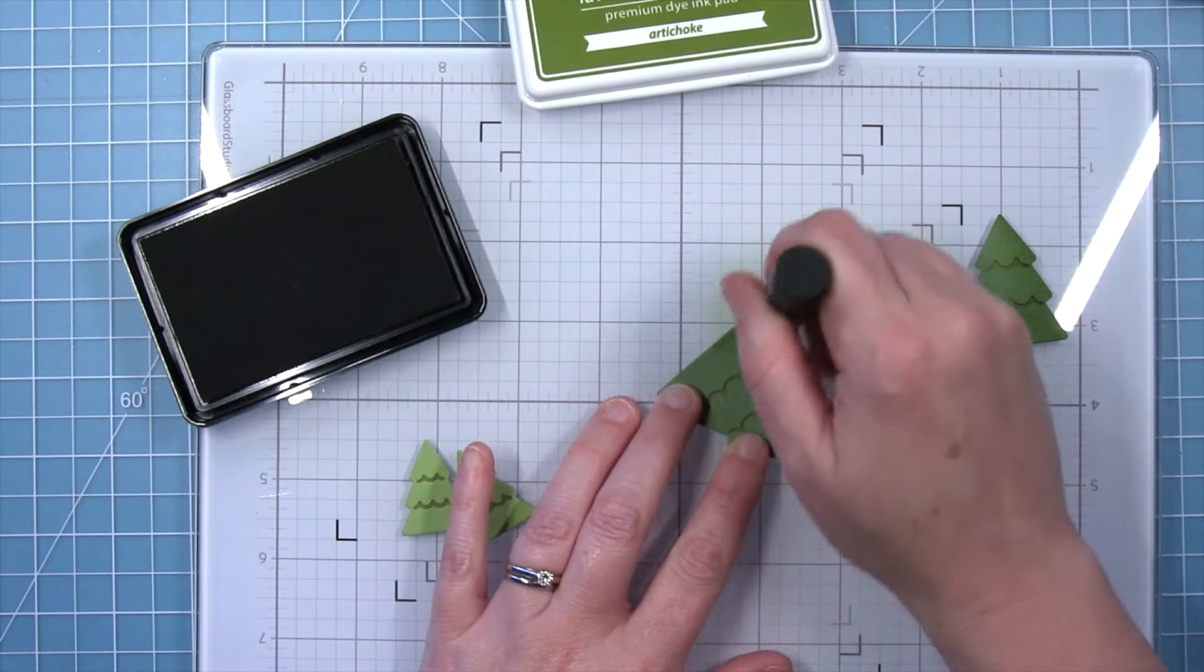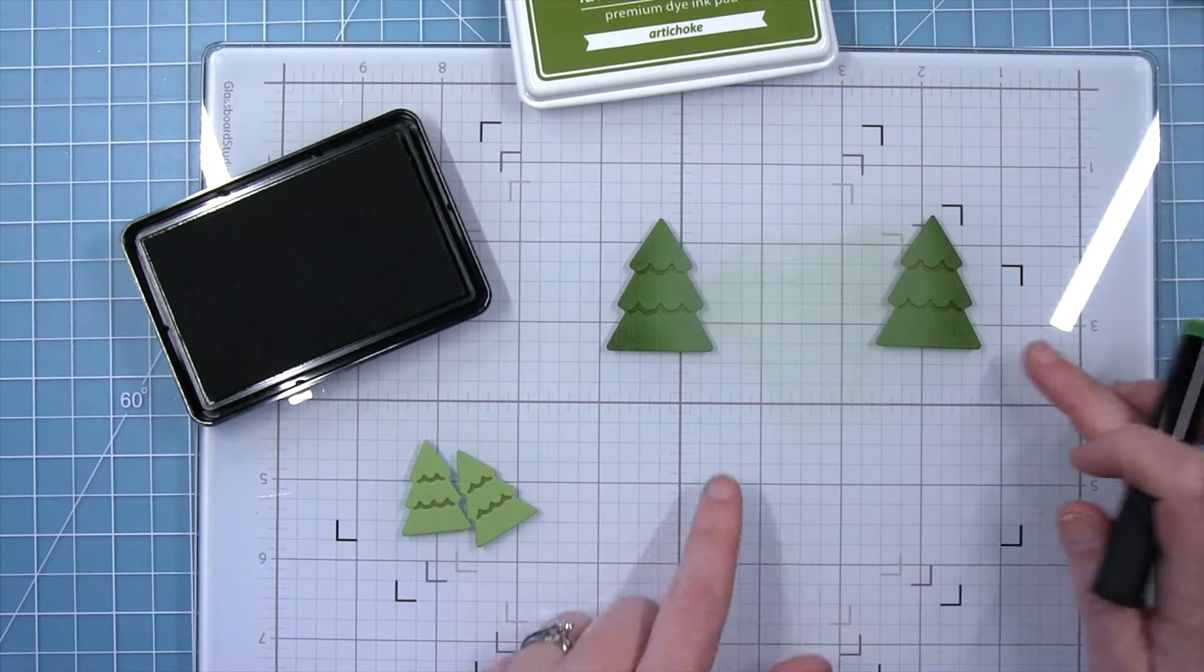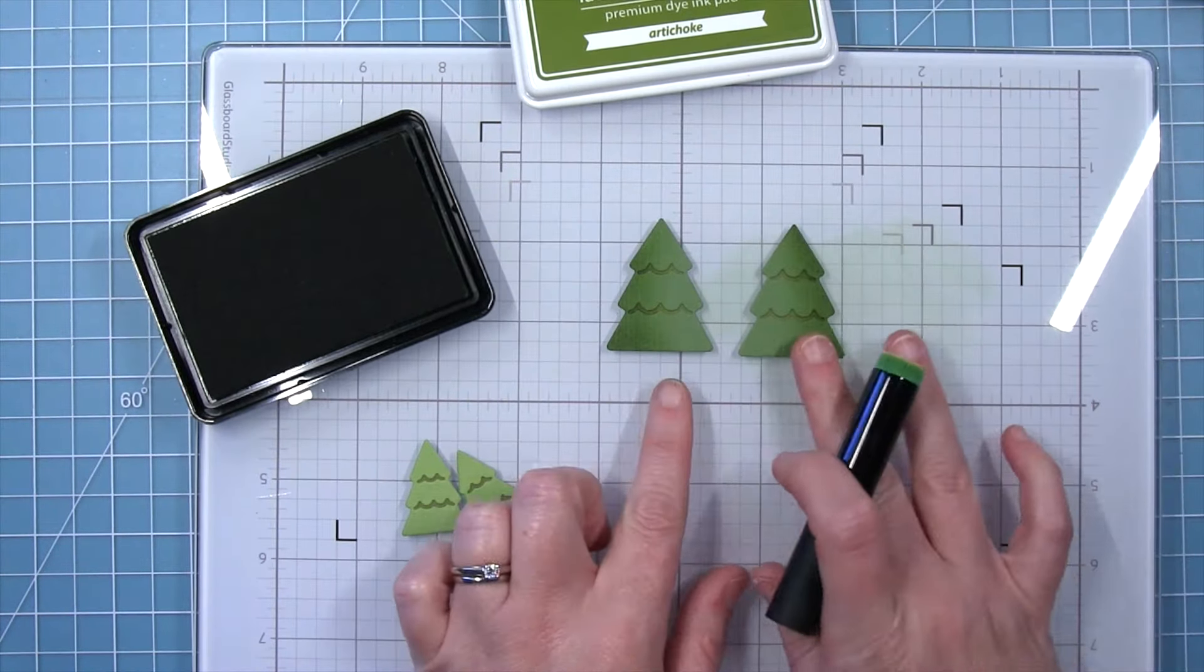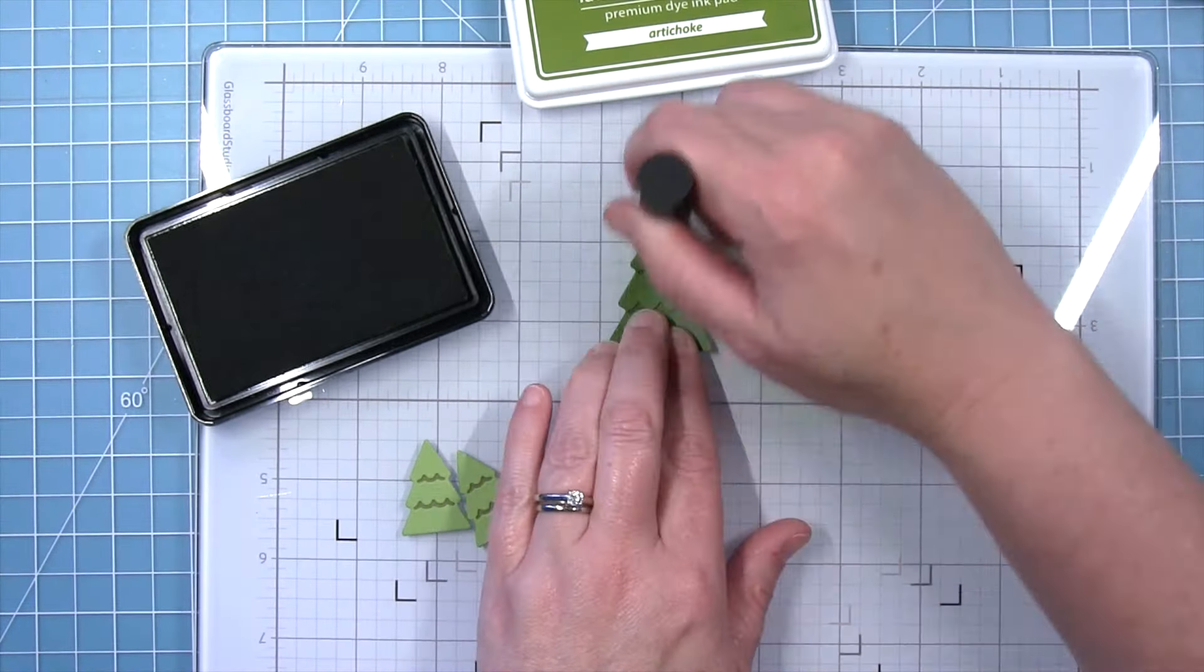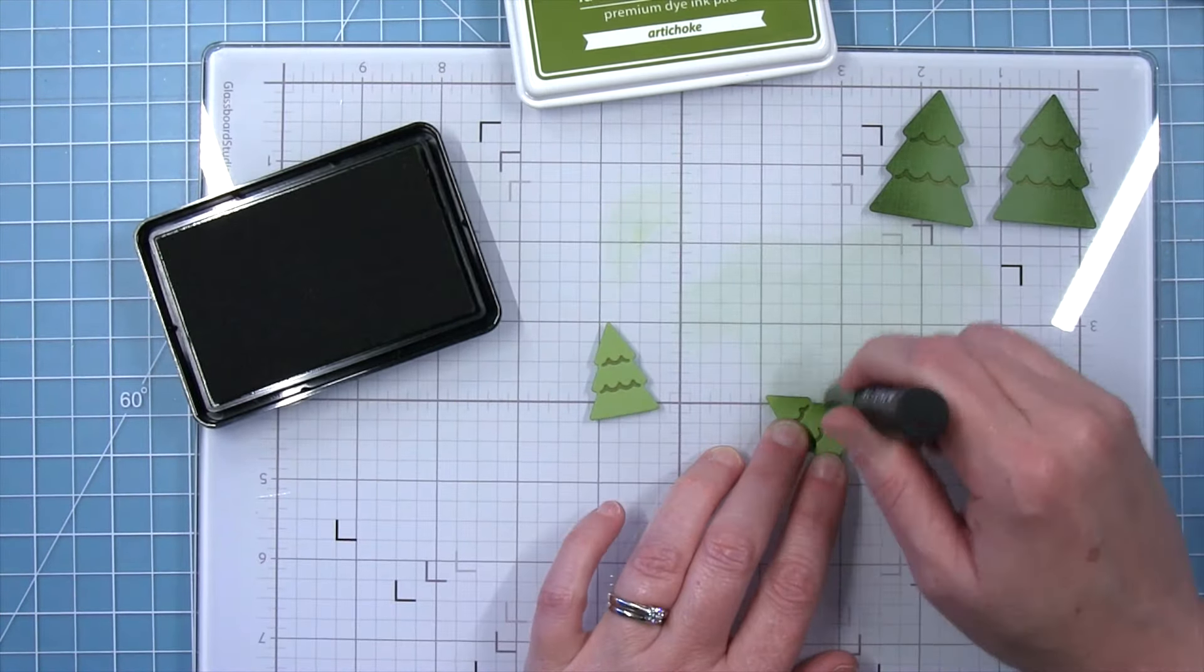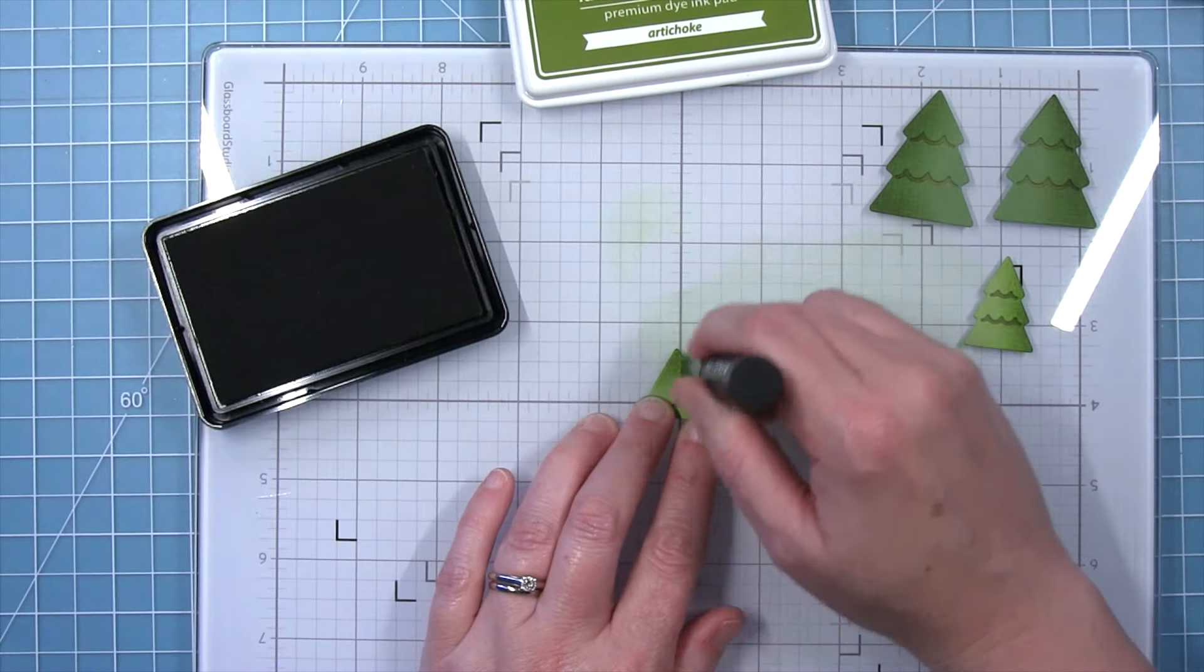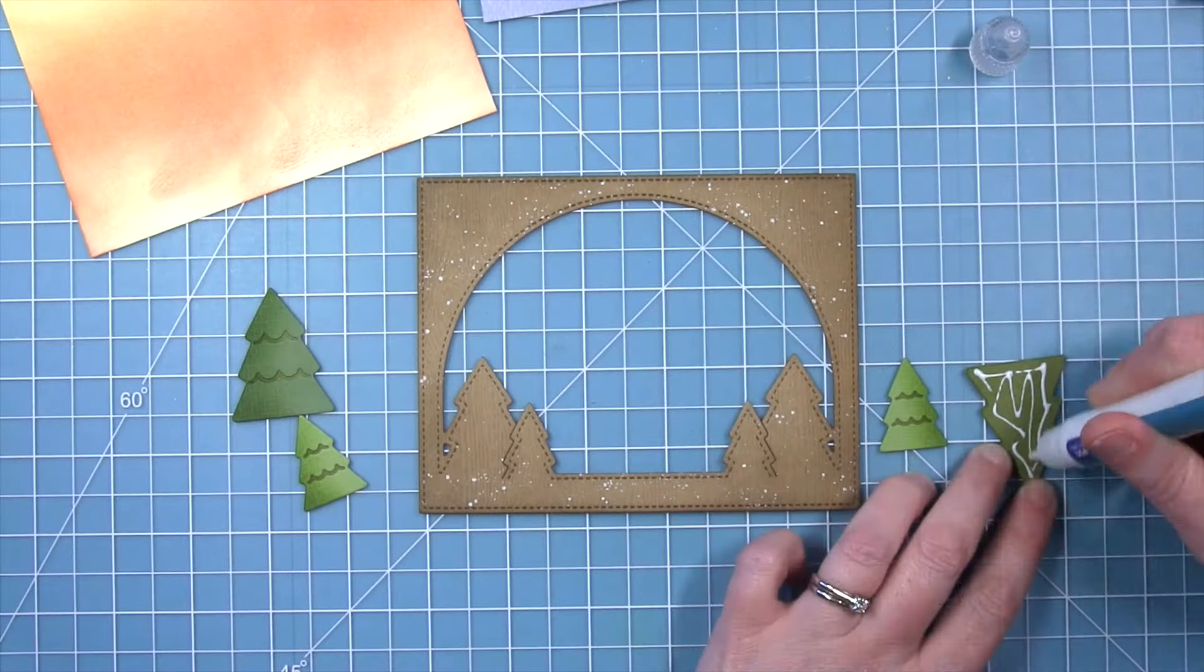Now we don't want to forget our trees. We want to do a little inking on those as well. I'm using some artichoke ink and a little blending brush and I'm blending the outside edge of the trees. So you can see one is the right side and one is the left side, and then I'll do the same to my little trees as well. And this is just going to kind of bring those die cuts to life a little bit more and make them stand out.